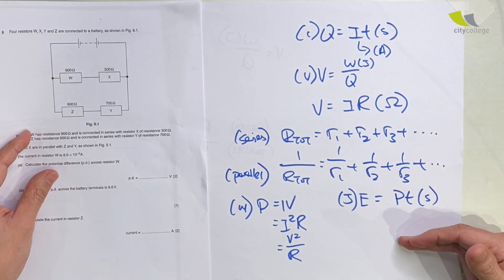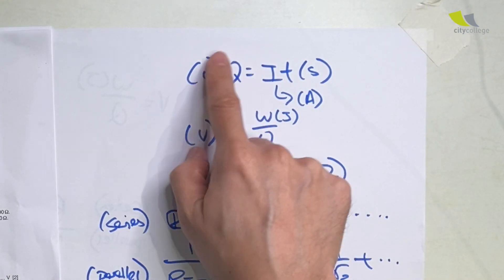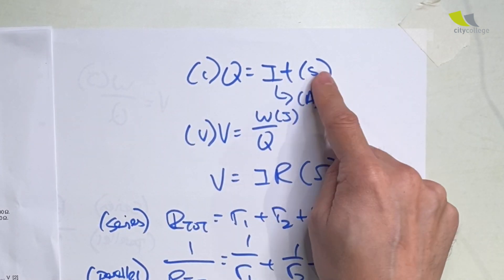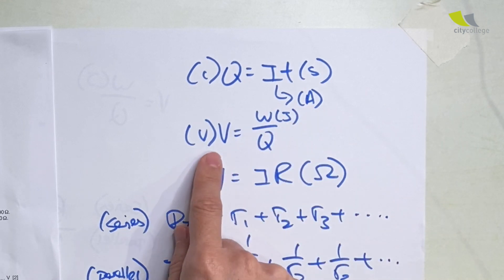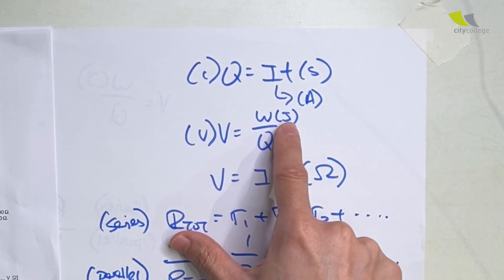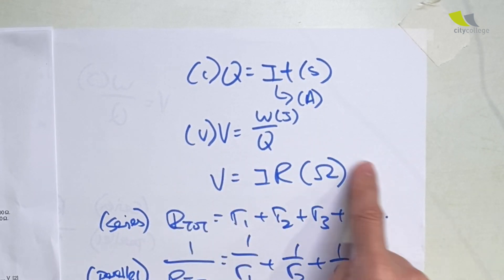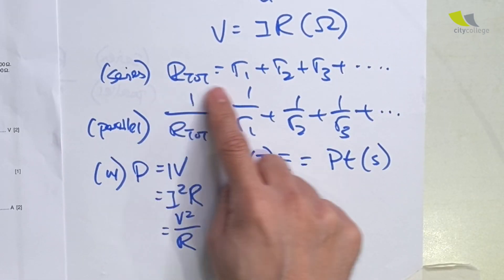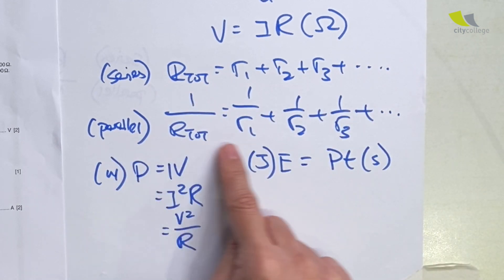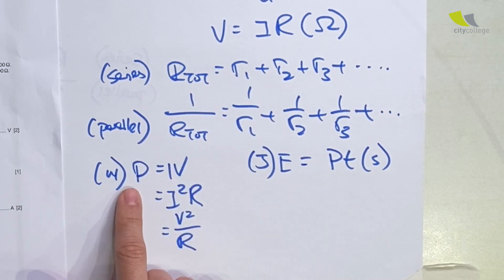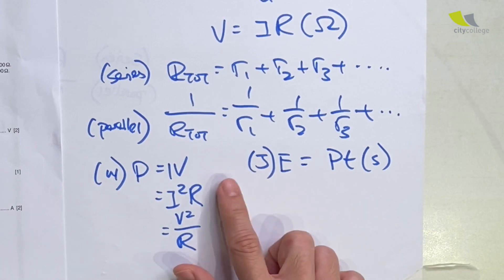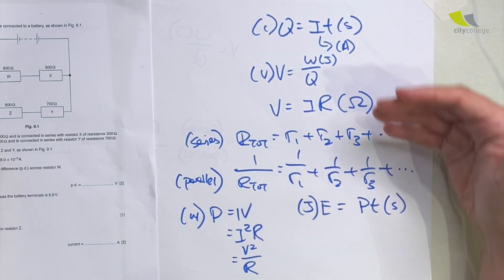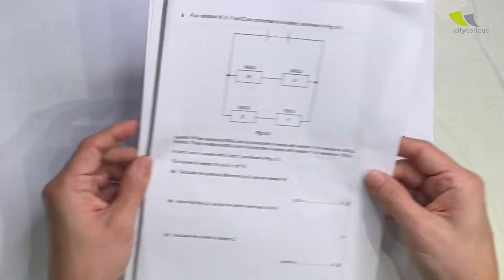The first formula is how to calculate charge, which is in coulombs: Q = I × t, where time must be in seconds and I is in amperes. Then V = W/Q, where work is in joules. Most importantly, V = IR, and resistance is in ohms. You also need to know how to calculate total resistance in series and parallel, how to calculate power in watts, and energy as power multiplied by time in joules.